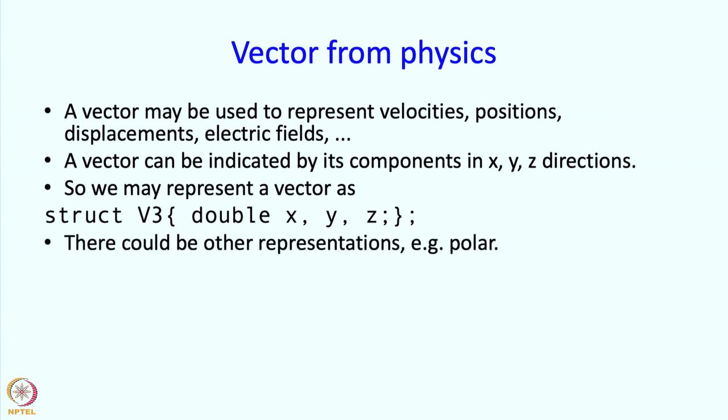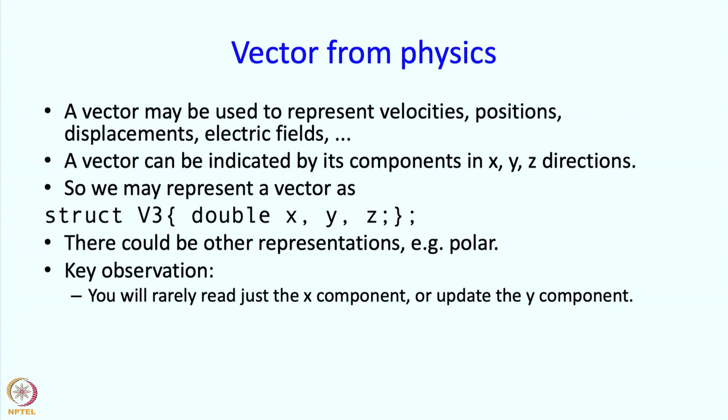There could be other representations as well, I mean there could be the polar representation for example or the cylindrical coordinate representation. So here is a key observation. For this representation you will rarely read just the x component or rarely update just the y component. What you will typically do will involve all 3 coordinates. So maybe you will add 2 vectors together or maybe you will scale up a vector. Both these operations will involve changing all the coordinates and that change will happen in a very specific manner.